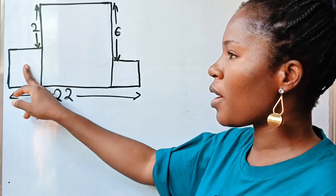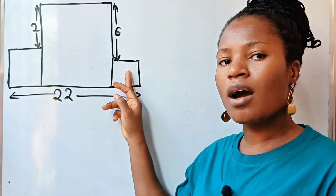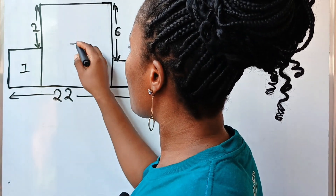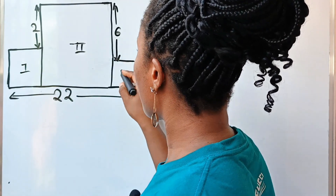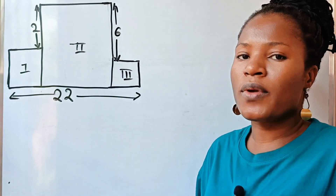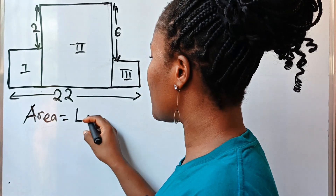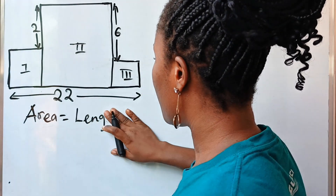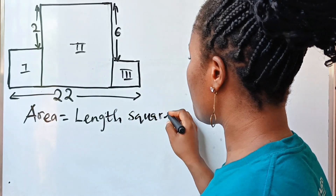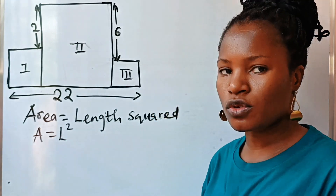So if we get the area of the first square, we add it to the area of the second square, and then add it to the area of the third square. First of all, the area of a square is equal to length squared, so that means area is equal to L raised to the power of 2.